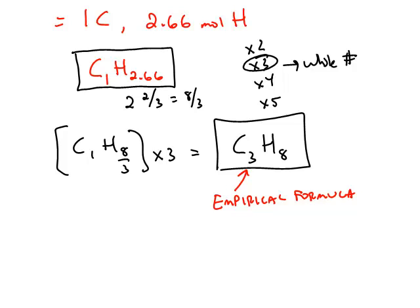The chemical formula that we found in the last video is called the empirical formula. The empirical formula is the simplest ratio of the elements that make up the formula.